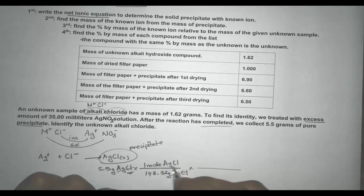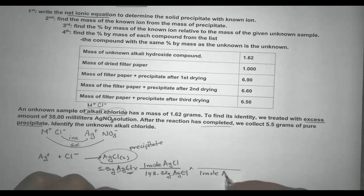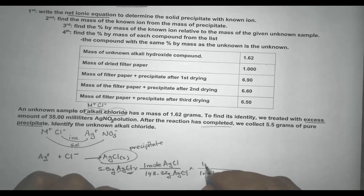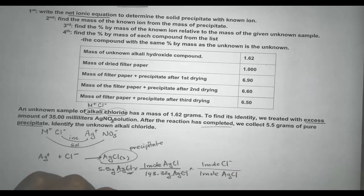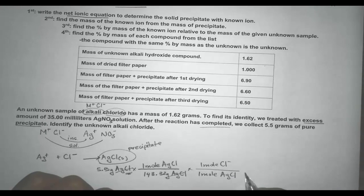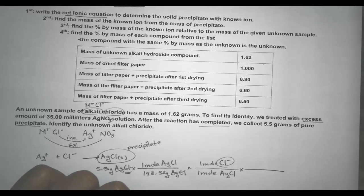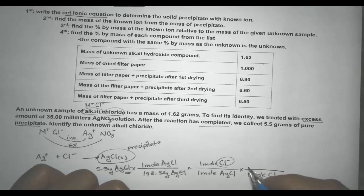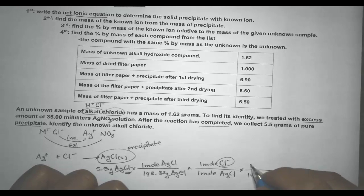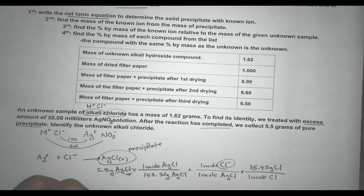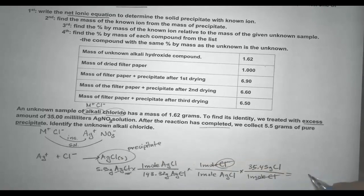In terms of mole ratio, within AgCl I have one mole of the compound and one mole of Cl ions. From there we solve for Cl specifically. I have one mole of Cl, and using the molar mass — it doesn't matter if it's an ion or not, because electrons are extremely small and don't affect the mass. The molar mass of chlorine from the periodic table is 35.45 grams per mole. Moles of Cl cancel out, and plugging everything into the calculator, we get 1.36 grams of Cl.